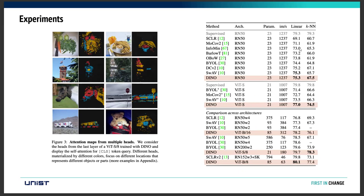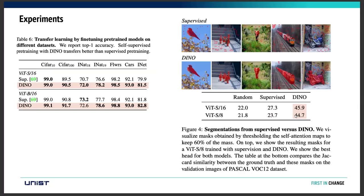They also present an experiments table clearly showing how these features are used for KNN classification with the ImageNet dataset, and it outperforms other methods in most cases. They also did transfer learning by fine-tuning the trained models on different datasets, reporting top-1 accuracy compared to supervised pre-training.